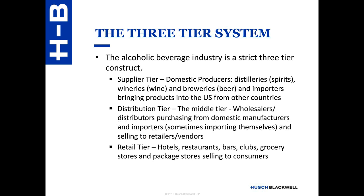The 21st Amendment gave states the right to determine how to regulate alcohol within their jurisdiction. Generally, the industry is a three-tier construct. You have your supplier tier — on the domestic side, these are the producers: distilleries, wineries, breweries, companies that bottle and mix alcohol beverages, and importers who bring in products from outside the US and sell them to wholesalers. The second tier is the distribution tier — the wholesalers and distributors — who purchase products from domestic manufacturers and importers.